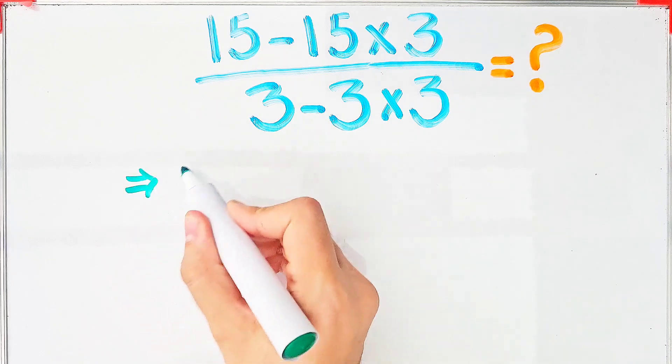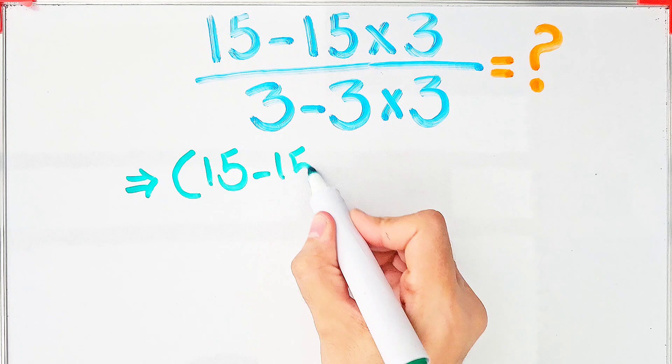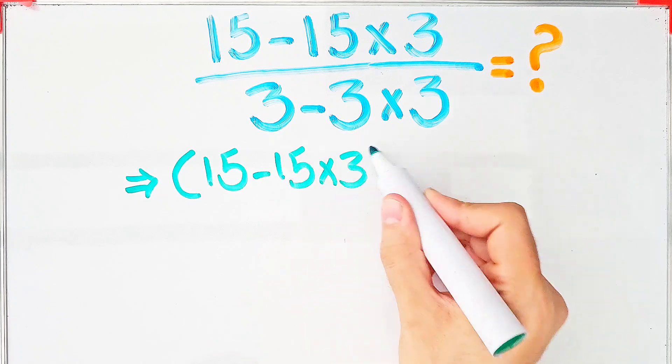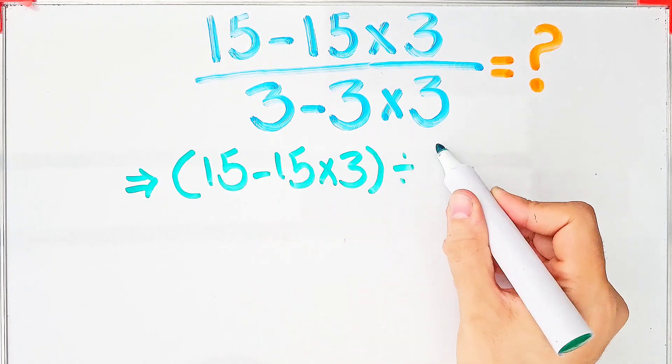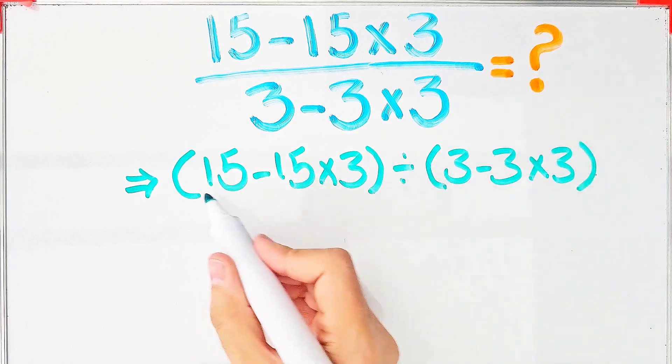We have 15 minus 15 times 3 in the numerator, divided by 3 minus 3 times 3. Okay guys, let's solve this question step by step together.